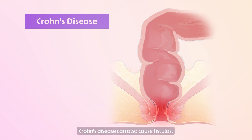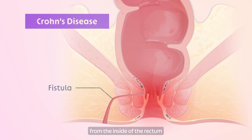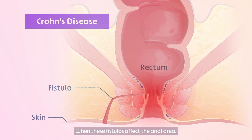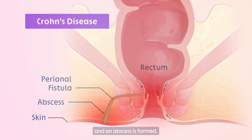Crohn's disease can also cause fistulas. Perianal fistulas are abnormal tunnels that form from the inside of the rectum to the outside skin. When these fistulas affect the anal area, these are called perianal fistulas. Once a fistula is formed, there is a chance it will become infected and an abscess is formed.